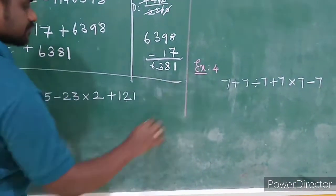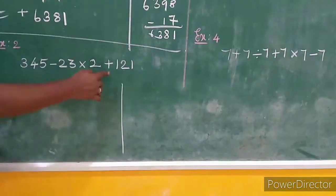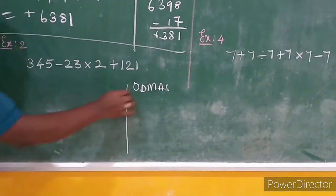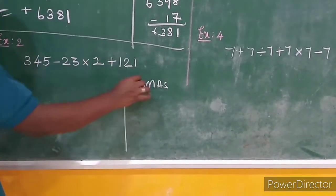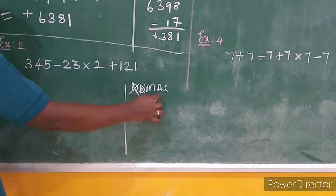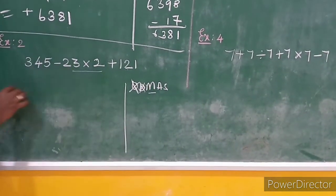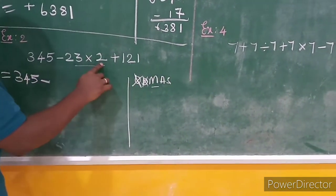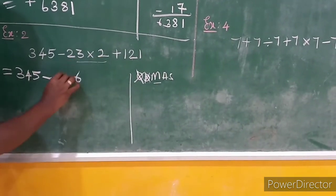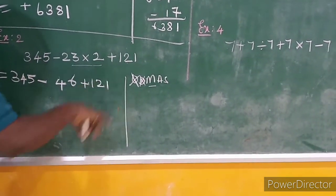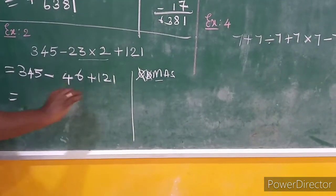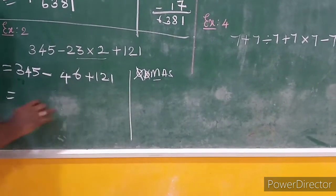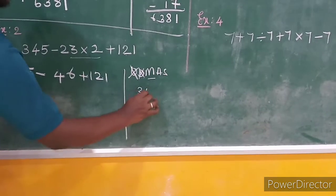Example 2: there is no bracket so we use ODMAS. No order, leave it. No division, leave it. Is there any multiplication? Yes. So 23 into 2: 2 twos are 4, 2 twenty-threes give 46. So the expression becomes 345 minus 46 plus 121.